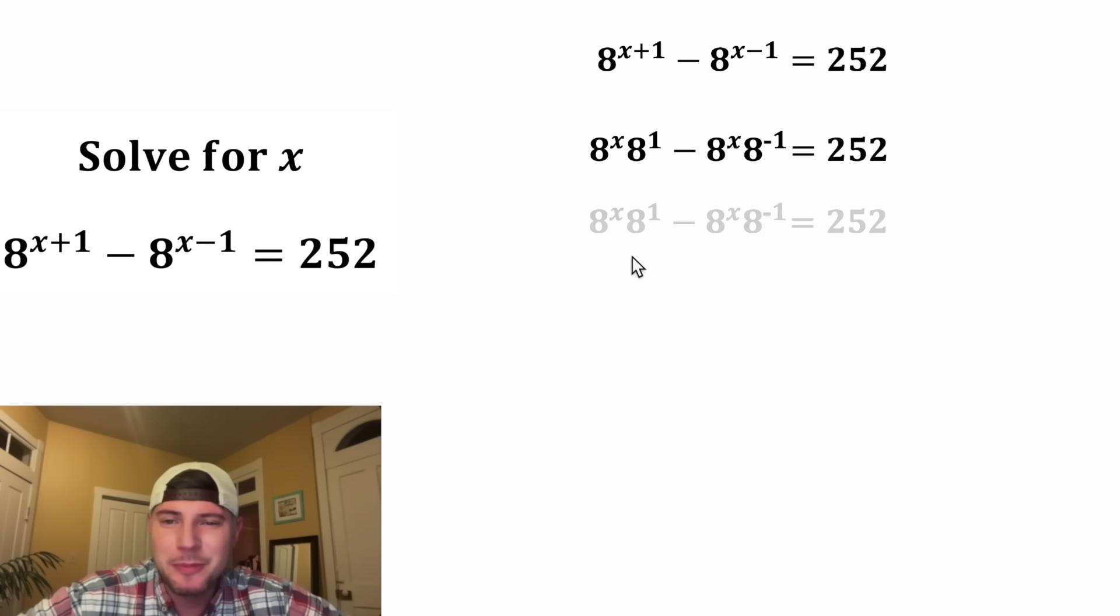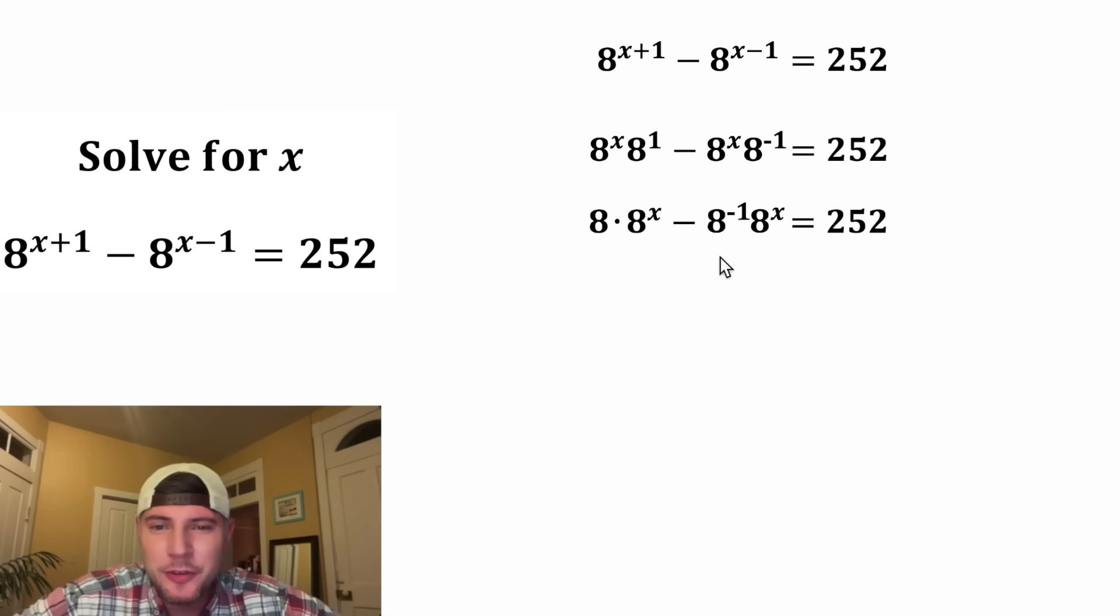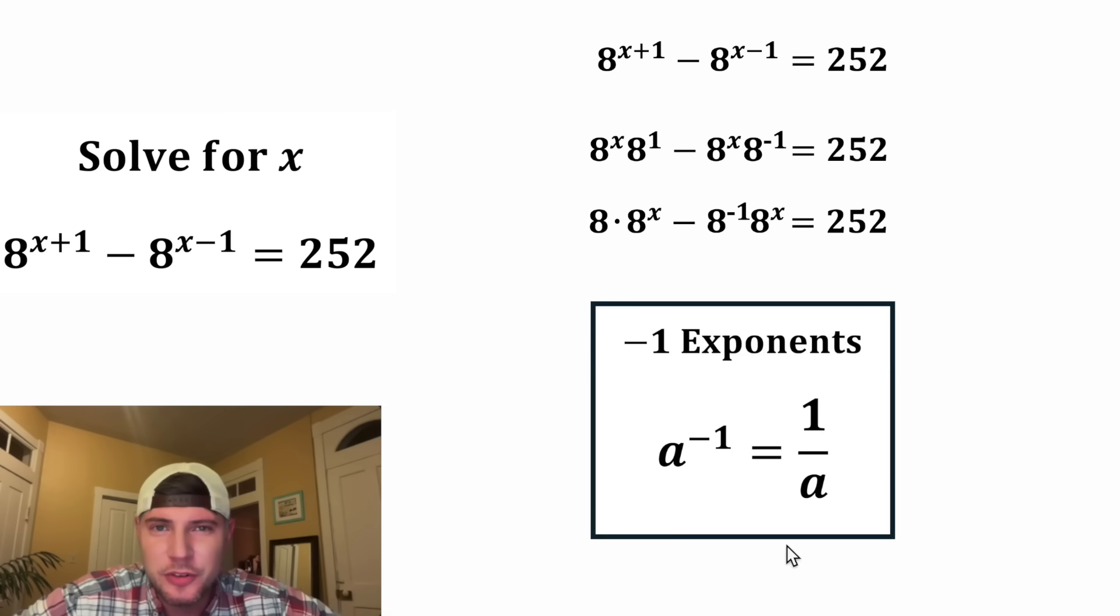For the next step, let's copy this down. I want to rearrange these. 8 to the 1 is the same thing as 8. And for 8 to the negative 1, here's the notes for negative exponents. 8 to the negative 1 is equal to 1 over 8. So 8 to the negative 1 equals 1 over 8.